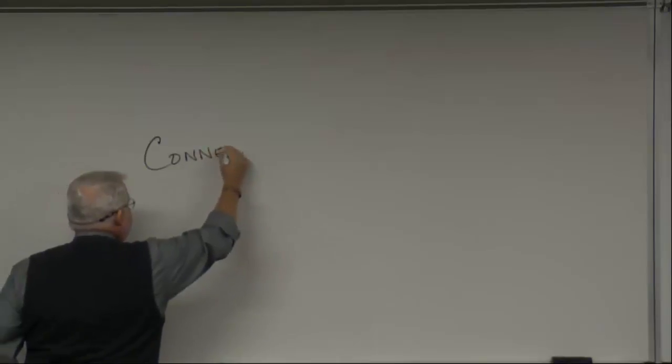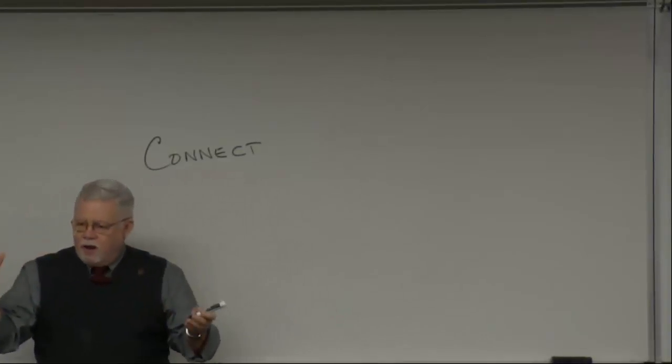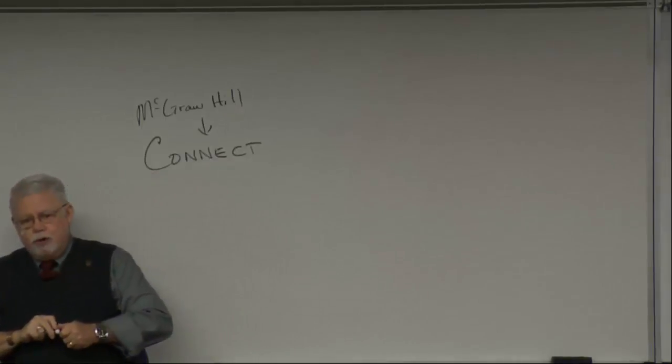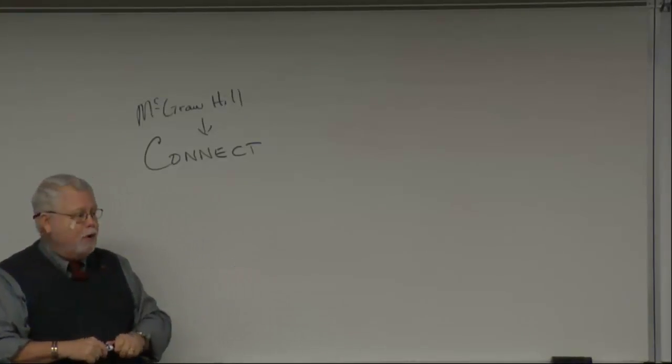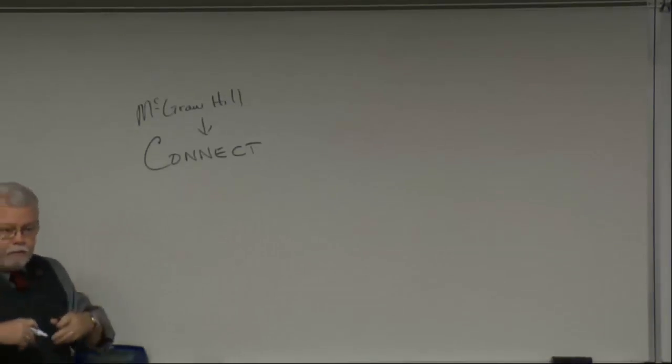In this course, you've got two major sources for information. The first one is called Connect. This is from McGraw-Hill, who is our publisher. You go to the bookstore or you go online to McGraw-Hill, and you buy an access code. Once you get the code, you go back and start looking for Connect.